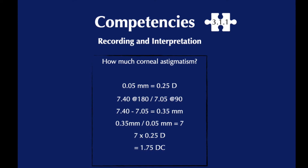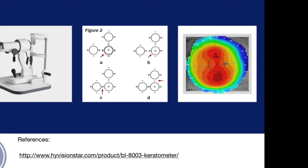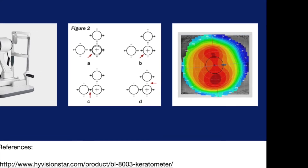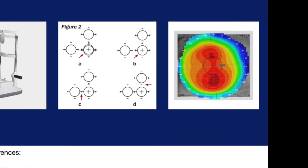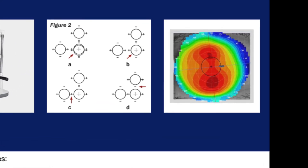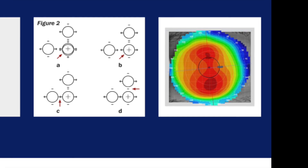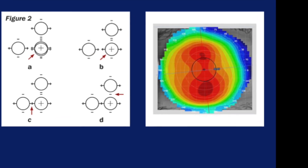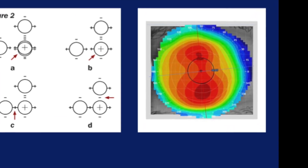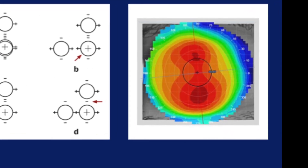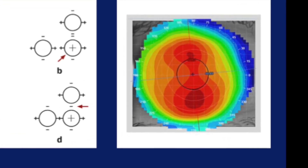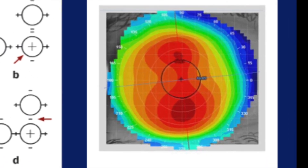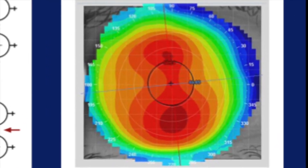A topographer is an imaging tool that maps the curvature of the cornea. The cooler colours represent flatter areas of the cornea while the warmer colours represent the steeper areas. However, it is highly unlikely that you will be required to interpret this data in your OSCE.